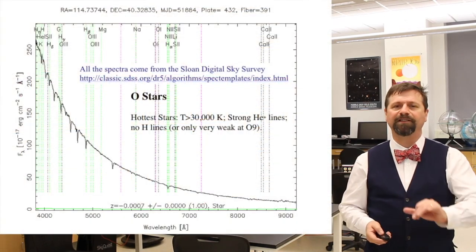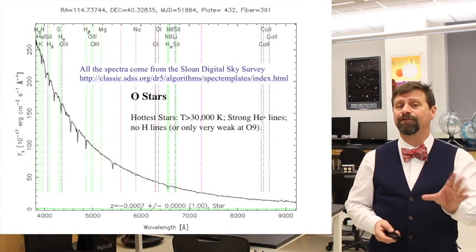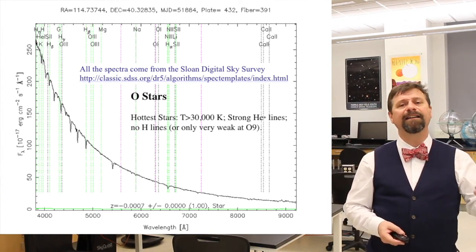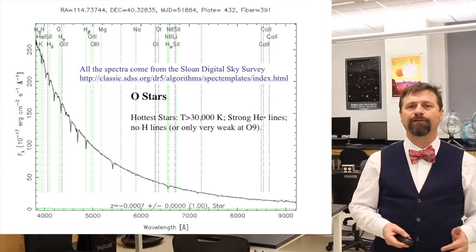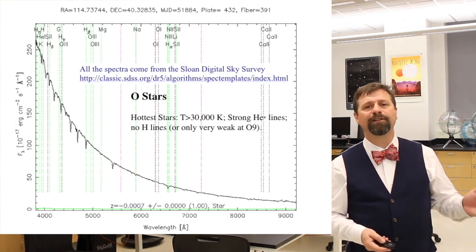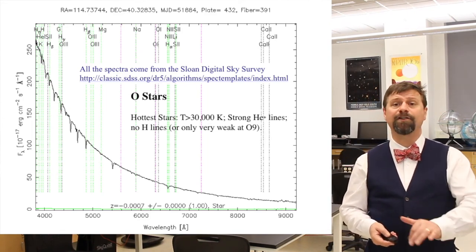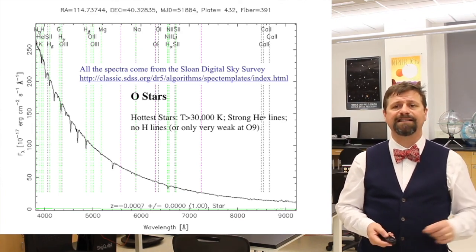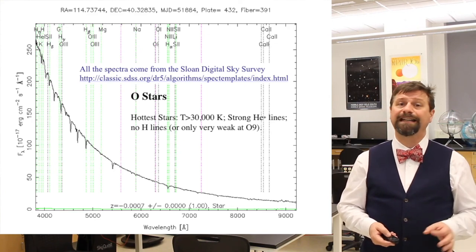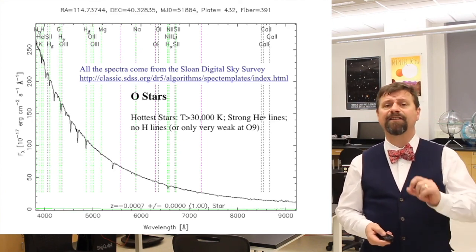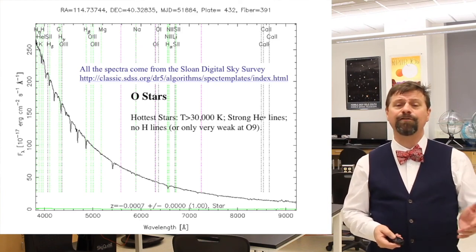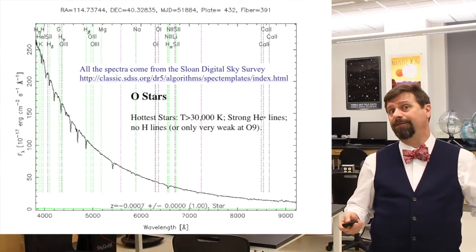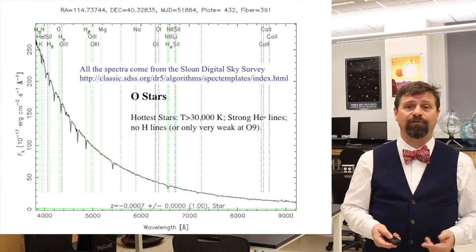Let's look at specific examples of stellar spectra. O stars are so very hot that they peak in the ultraviolet — outside the range of the Sloan Digital Sky Survey. They have very strong ionized helium lines, and temperatures over 30,000 Kelvin. Hydrogen lines don't exist because all the hydrogen is ionized — you can't get absorption if there's no electron in the atom. B stars start showing hydrogen absorption features, but they're weak, along with some neutral helium.